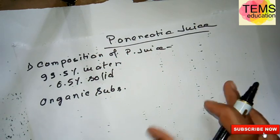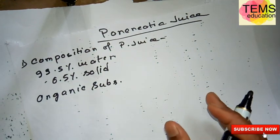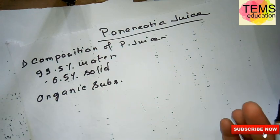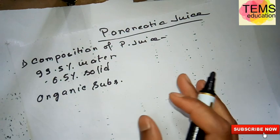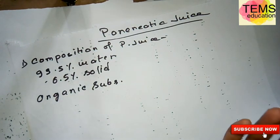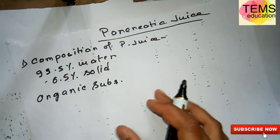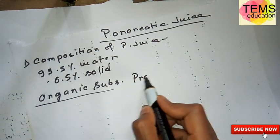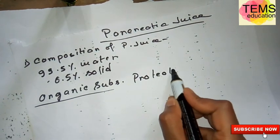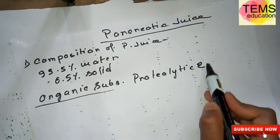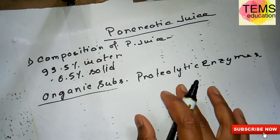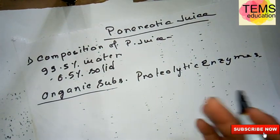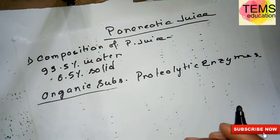The organic substances of the pancreatic juice are enzymes. There are three different types of enzymes present in the pancreatic juice: proteolytic enzymes, lipolytic enzymes, and amylolytic enzymes. Proteolytic enzymes are different types of enzymes which act on protein.